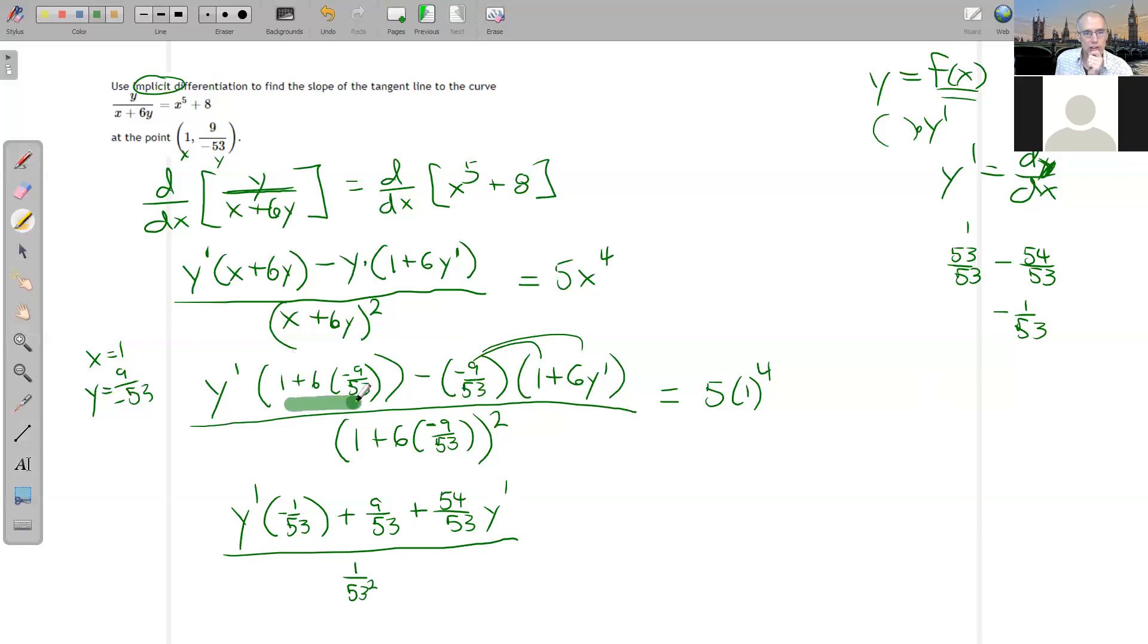Because this calculation is the same as that calculation, which is this right here. Okay. And then on the other side we've got 5.